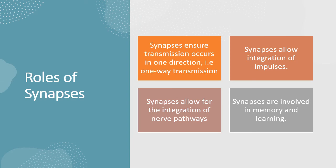What do synapses do and why are they important? Synapses ensure that transmission occurs in one direction — one-way transmission of nerve impulses. They allow integration of impulses and pathways, and they are also involved in memory and learning, so you remember how to respond to a stimulus, especially one you've experienced before. This is also usually an exam question, and it's the easiest format question you could get — you just write the roles of synapses.